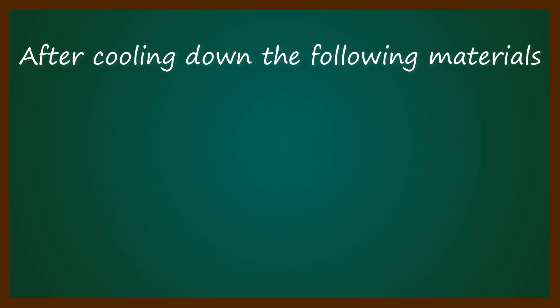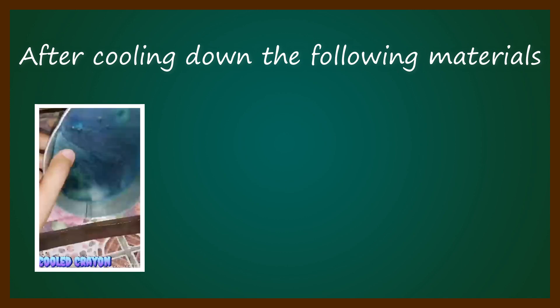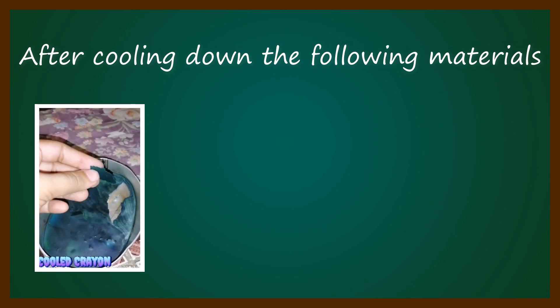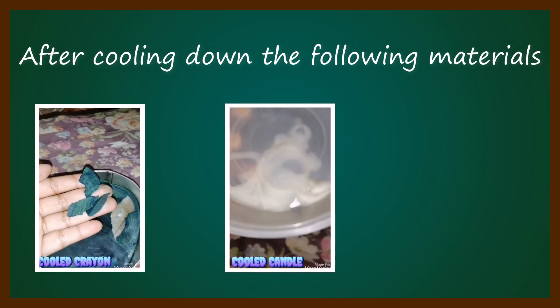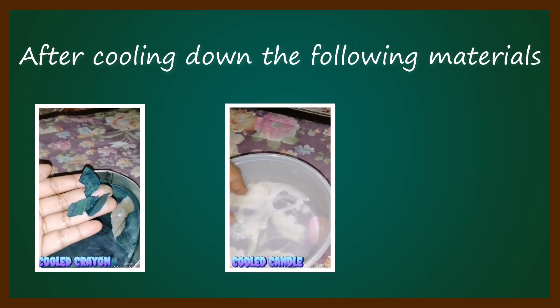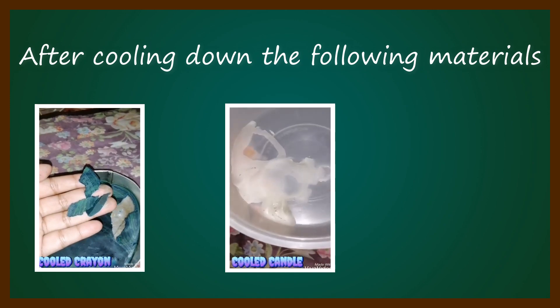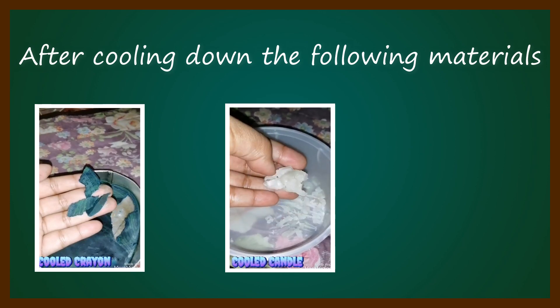After heating the materials, let us cool them down and describe their changes when they are cooled. The first one is crayon — the liquid form of crayon changed back to solid. It also changed its size, shape, and texture. The second one is candle — the liquid form of the candle changed back to solid. It also changed its size, shape, and texture.